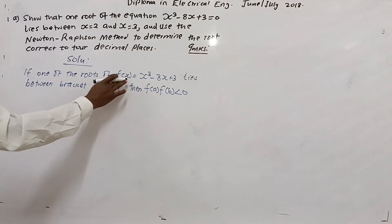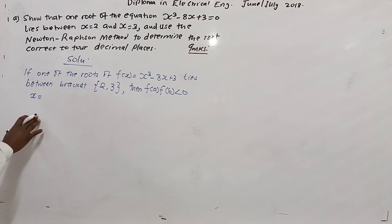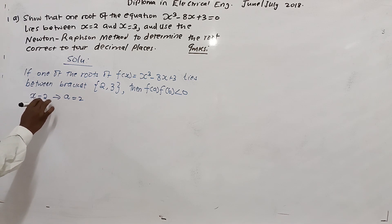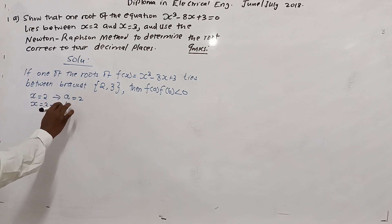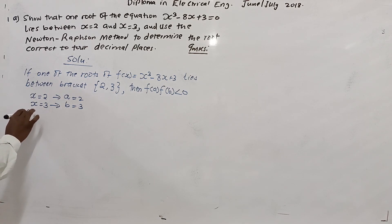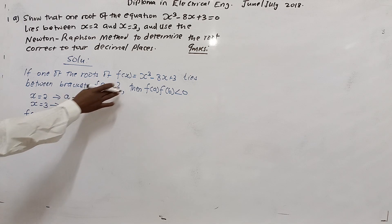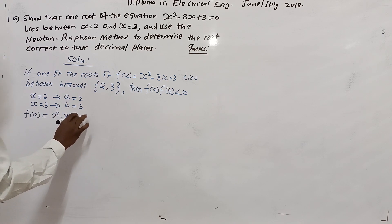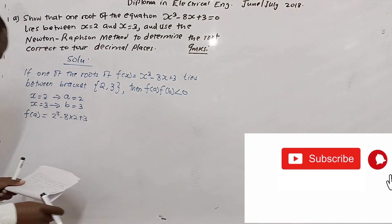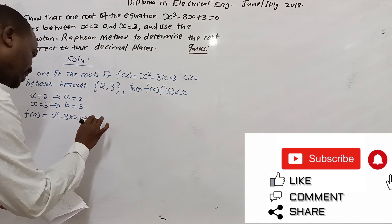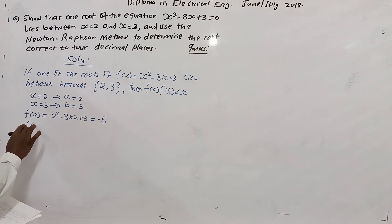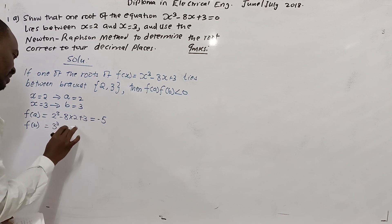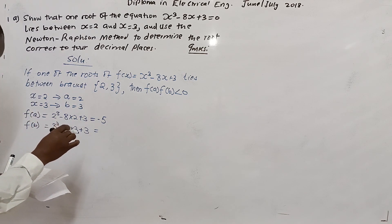We are going to take x = 2 to be our a, so a = 2, and take x = 3 to be our b, so b = 3. Then f(a) = 2³ - 8(2) + 3, which equals -5. And f(b) = 3³ - 8(3) + 3, which equals 27 - 24 + 3 = 6.